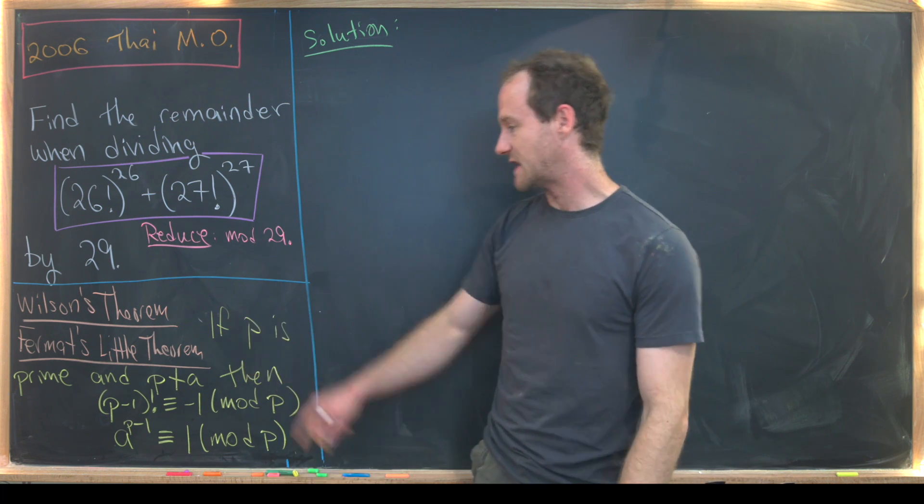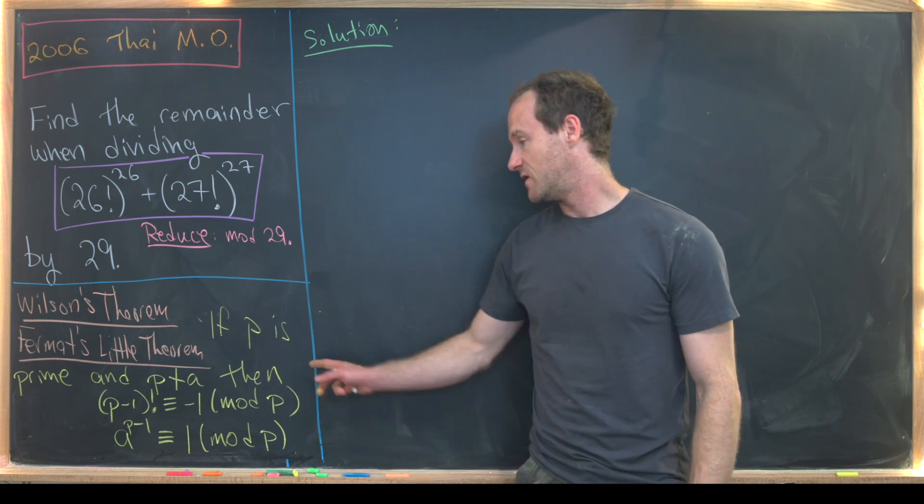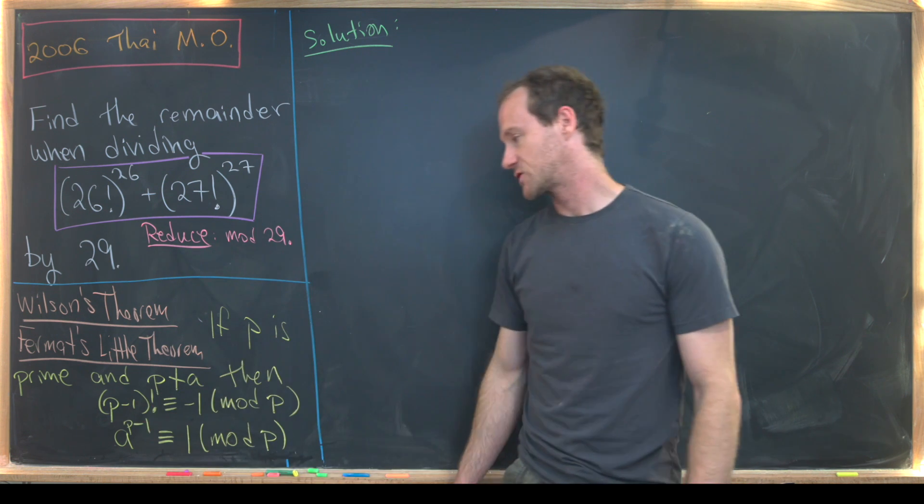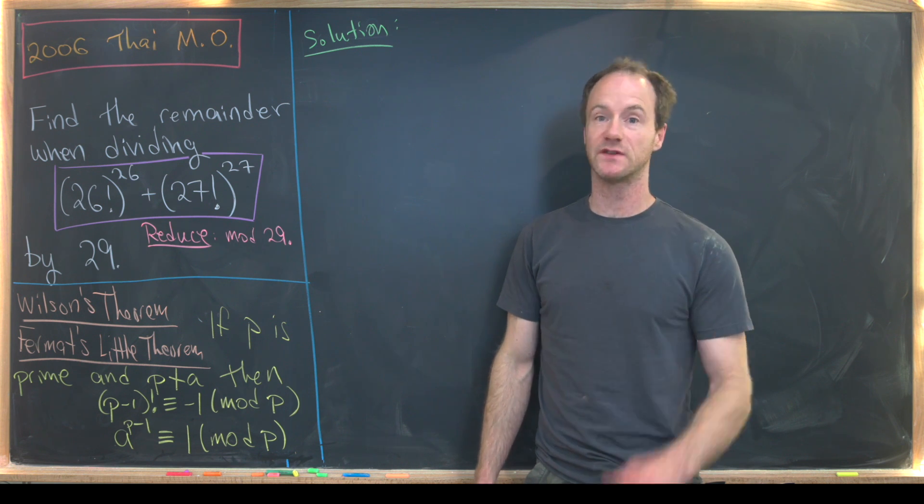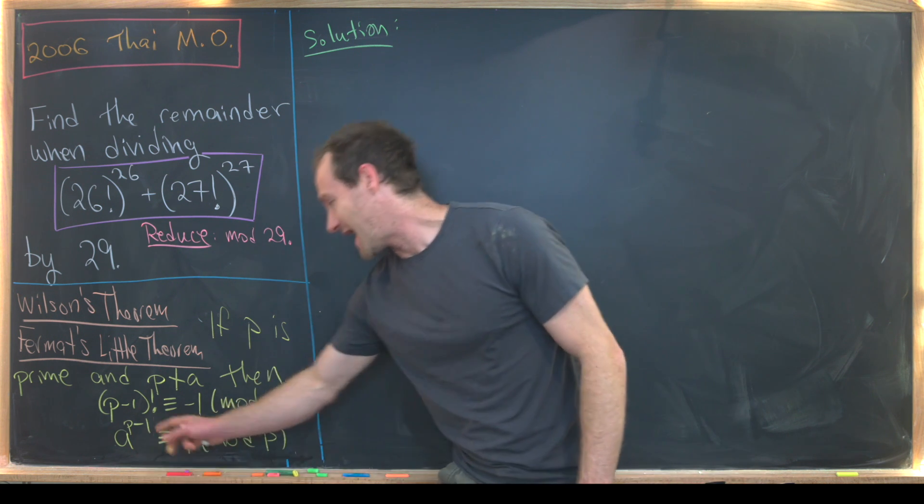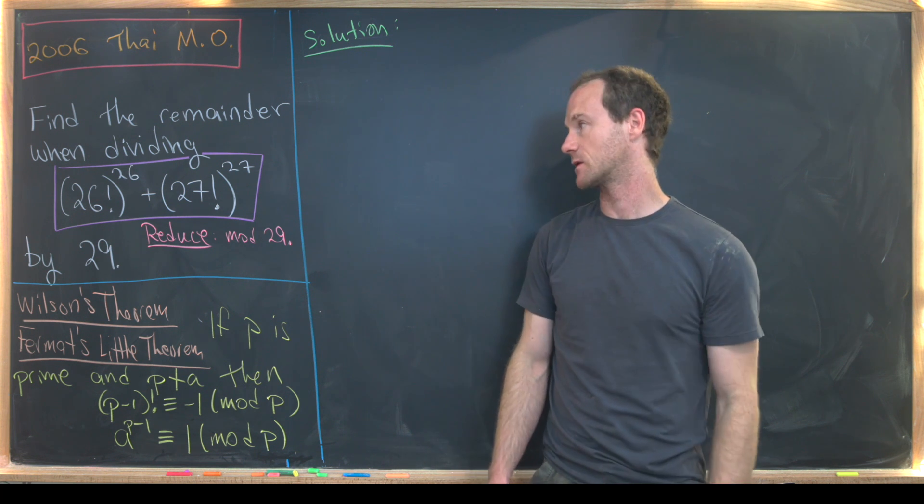If p is a prime and p does not divide a, then p minus 1 factorial is congruent to minus 1 mod p. So that's Wilson's theorem. And then a to the p minus 1 is congruent to 1 mod p. So that's Fermat's little theorem.